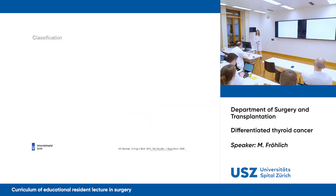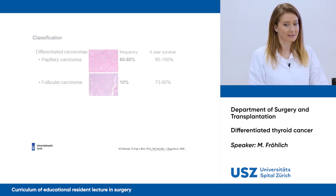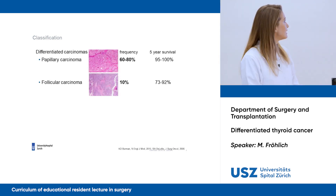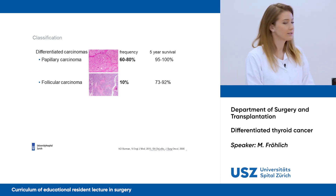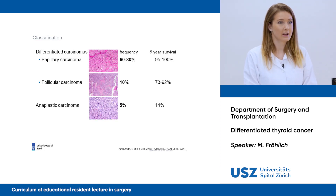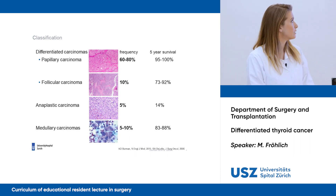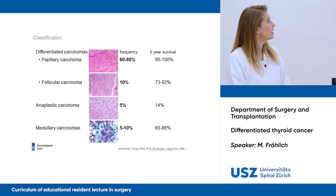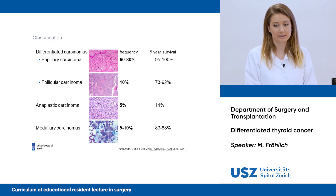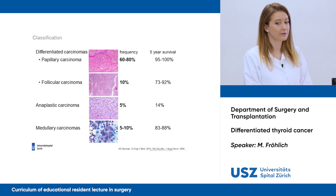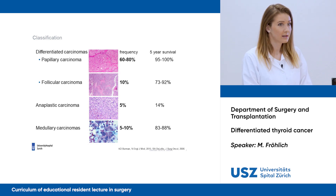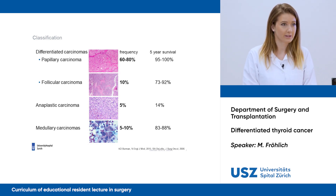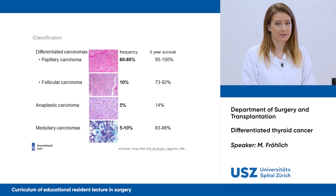Thyroid cancer can be classified into different carcinomas. Differentiated carcinomas include papillary carcinoma and follicular carcinoma. Then we have undifferentiated carcinomas — anaplastic — and we also have medullary carcinomas. Papillary carcinomas are the most frequent thyroid cancers and have a really good five-year survival. Anaplastic carcinomas are really rare and have a bad outcome after five years because of their aggressive behavior.